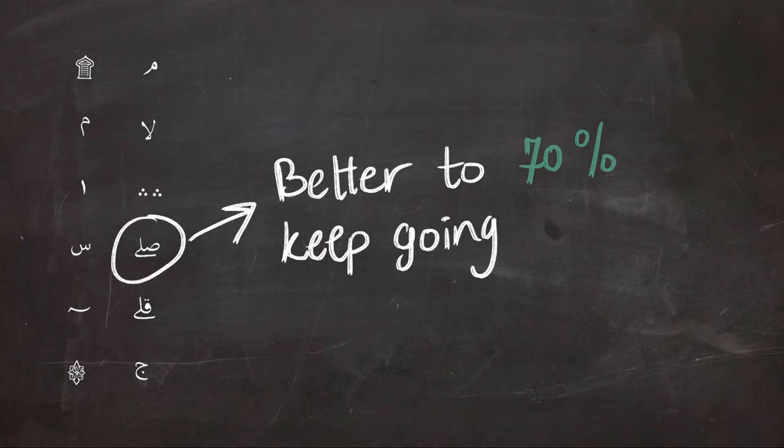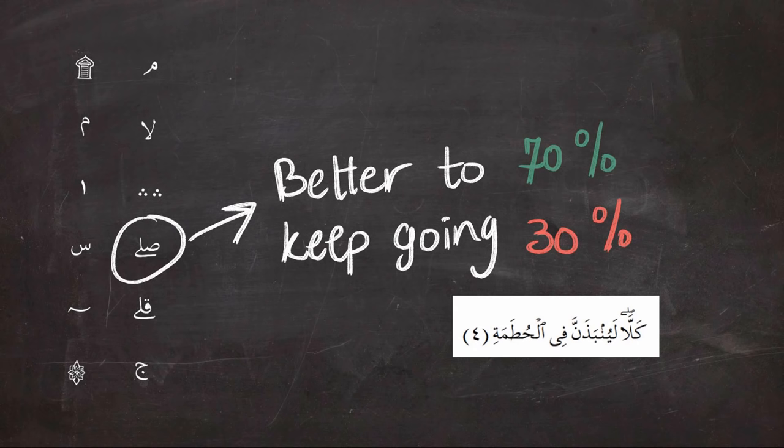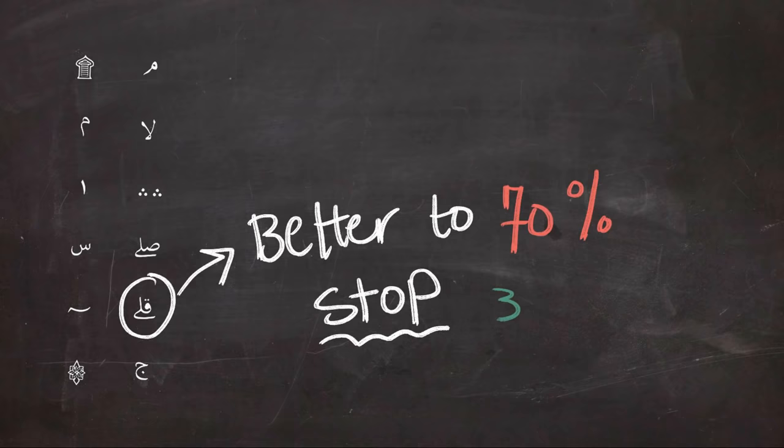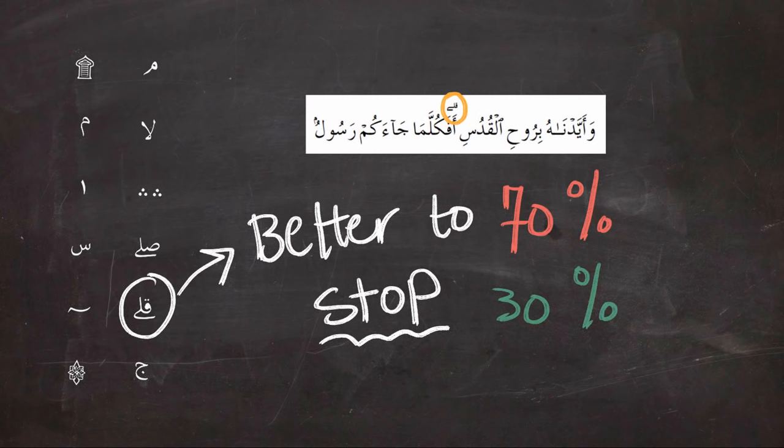Next is the symbol of Kill, which is the exact opposite of Sill, and it means it is better to stop. So 70% to stop, 30% to go, like the example. So it is better to stop at the sign.